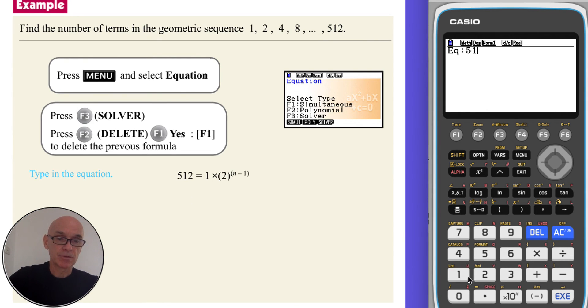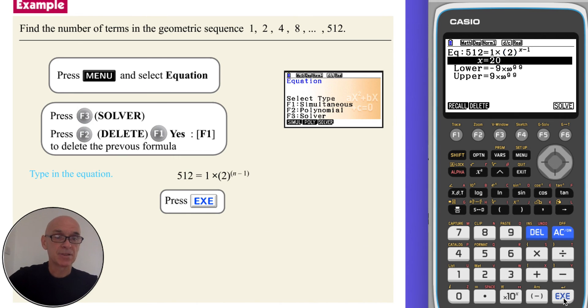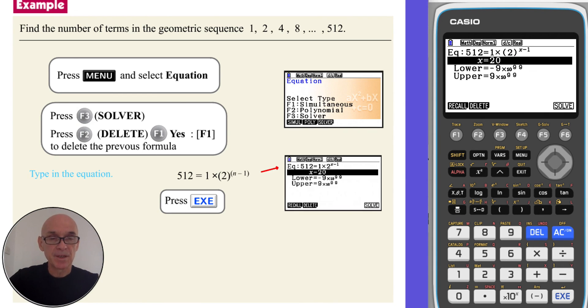So 512, and then shift to get to the equals, 1 multiplied by brackets, 2 close brackets, to the power of, and we use x for the variable, take away 1. Then if we press execute to enter the equation. Just to note that the number next to x is not the solution to this equation, because we haven't pressed solve yet.